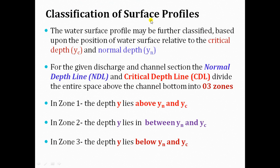We can classify the surface profile further. The water surface profile may be classified further based upon the position of the water surface relative to the critical depth Yc and normal depth Yn. The normal depth line and critical depth line divide the entire space above the channel bottom into three zones. If the depth of flow lies above both the normal depth and critical depth, it comes in zone 1. If the depth of flow lies between the normal depth and critical depth, it comes in zone 2.